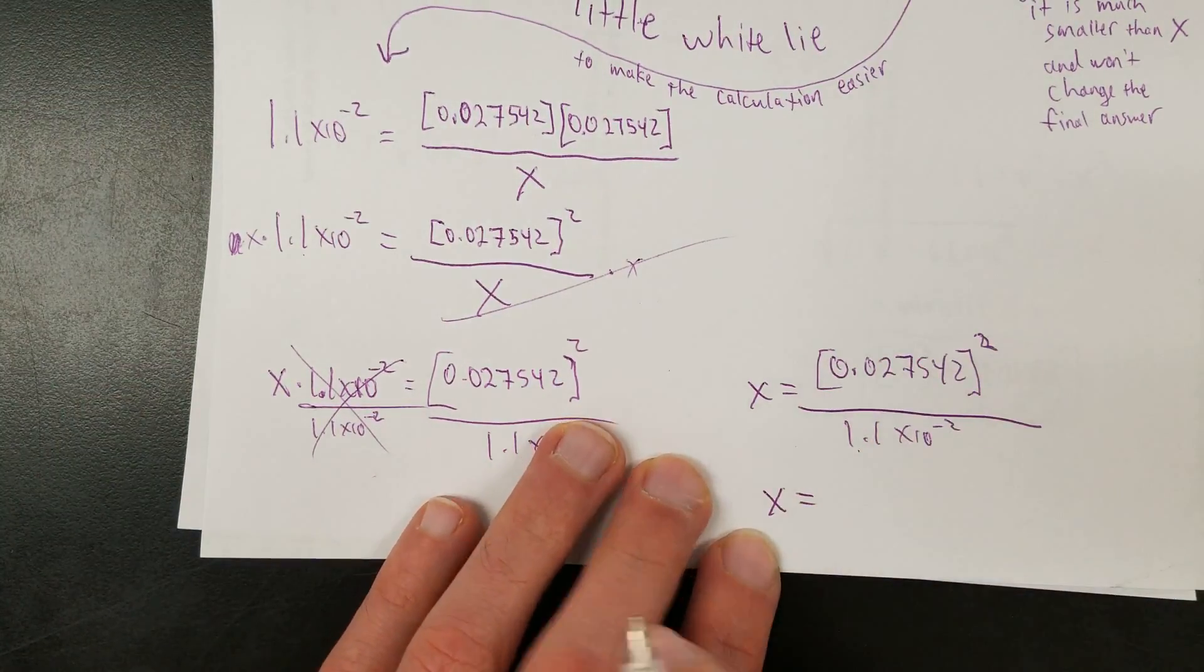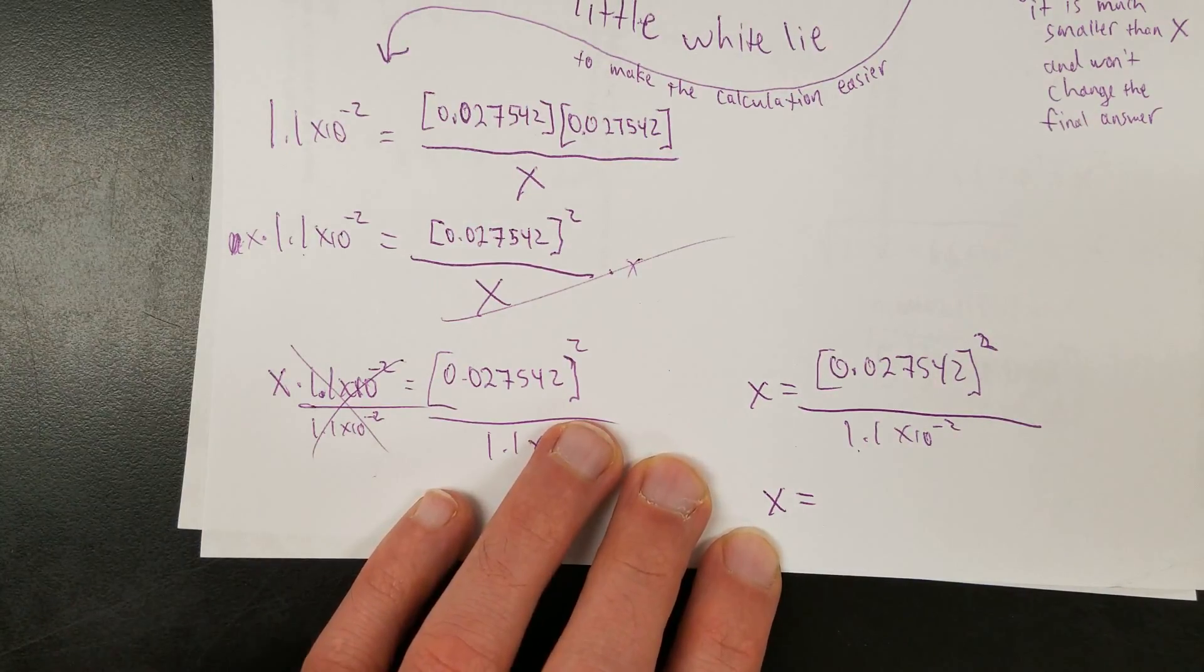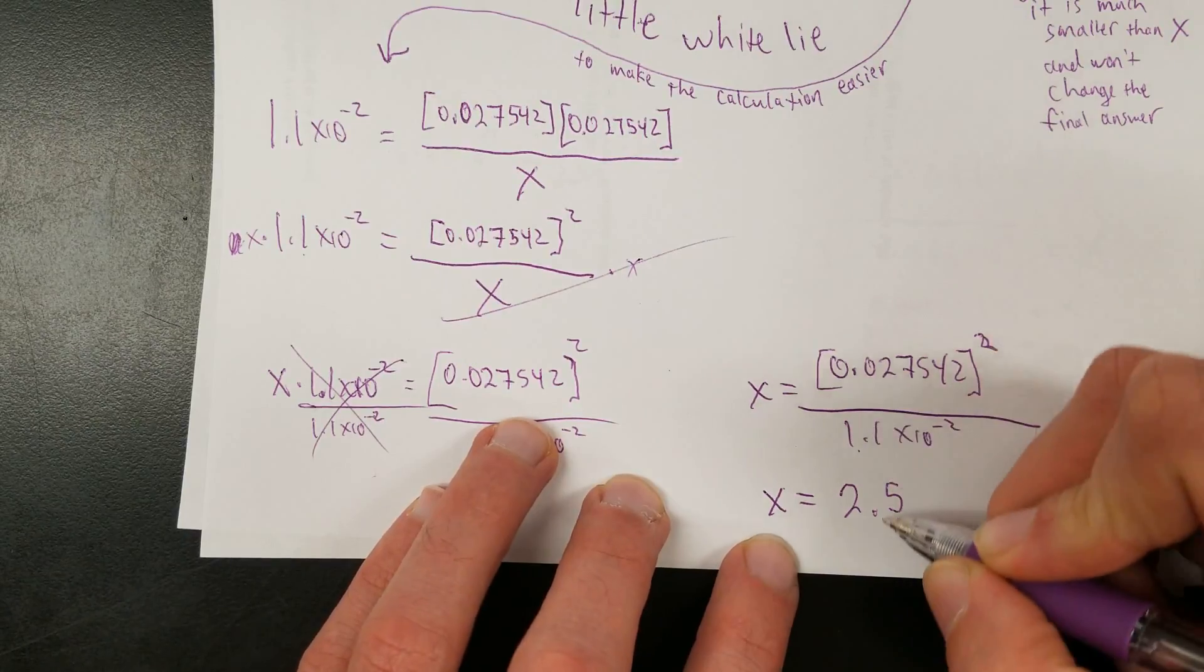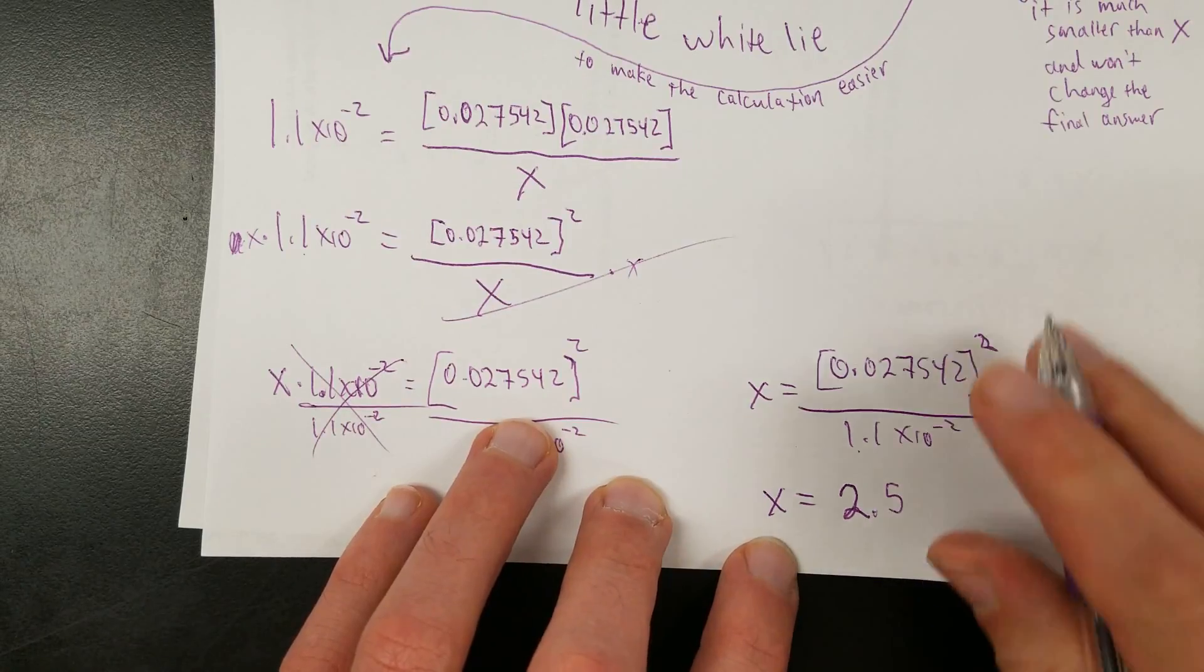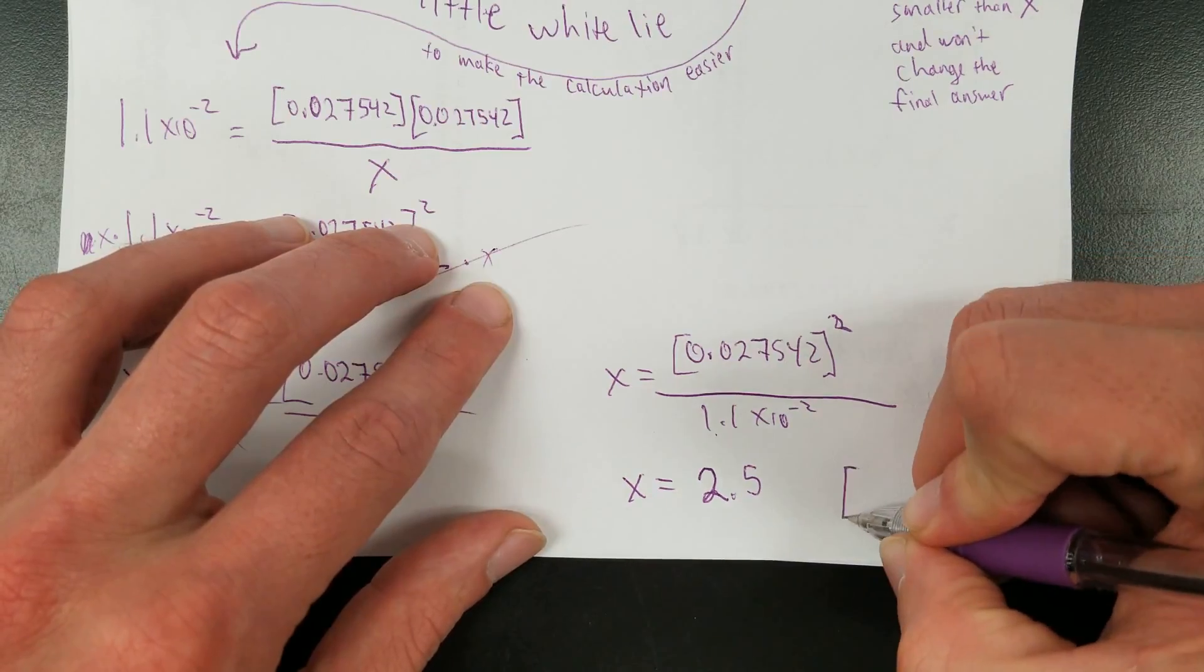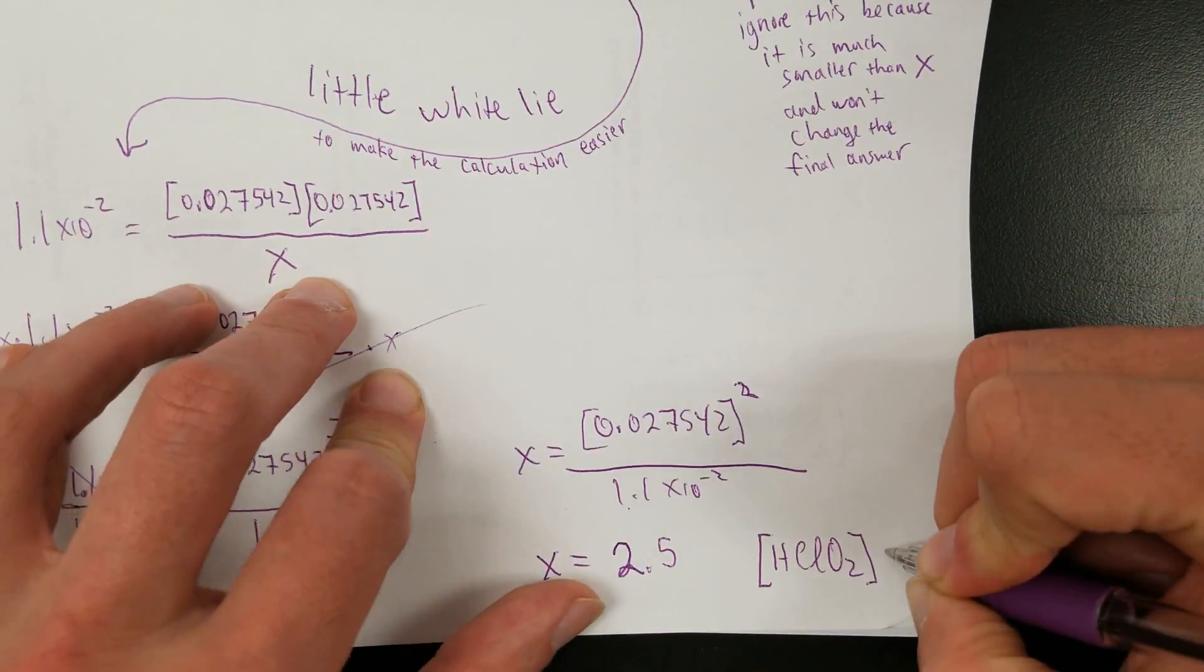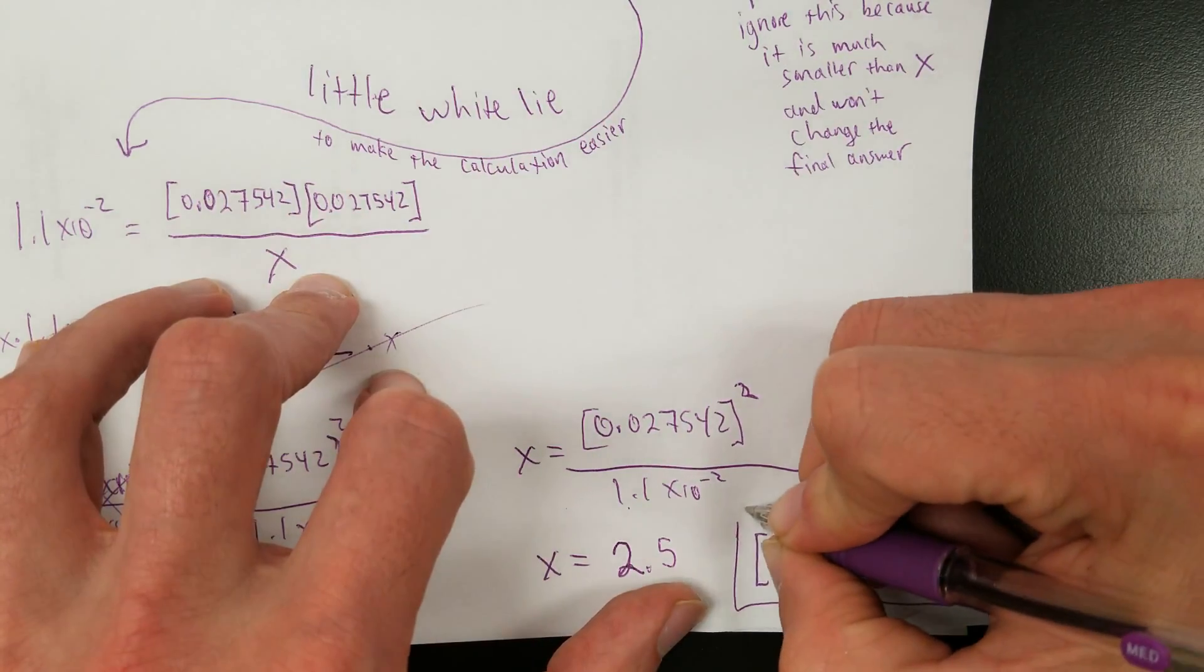And when we do that, X equals, let's see, I did the calculation earlier. What did it come out to as? So approximately 2.5. Rounding for two sig figs. It's two sig figs, two sig figs. Now remember, what does X represent again? It's the original concentration of the acid. So we're going to say the concentration of the acid, which is the acid is HClO2, is 2.5 molar. And that is our final answer.